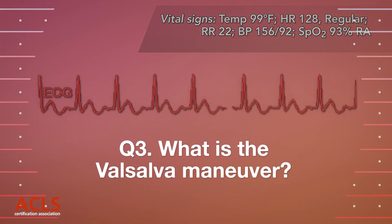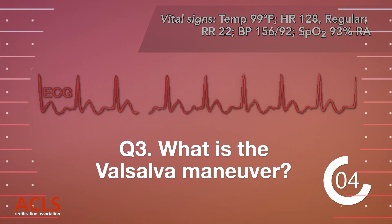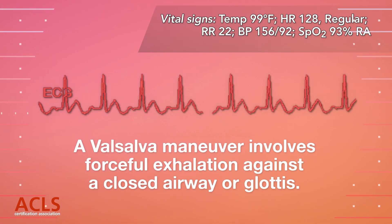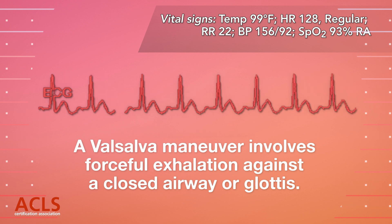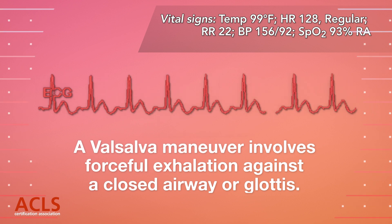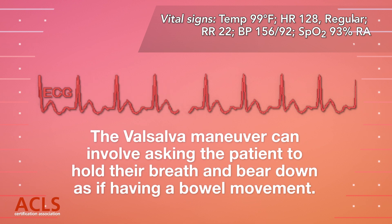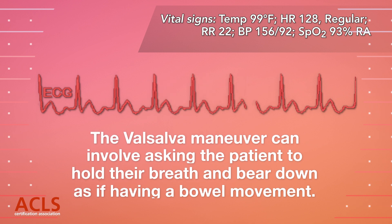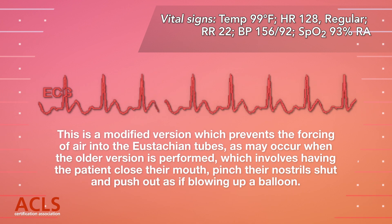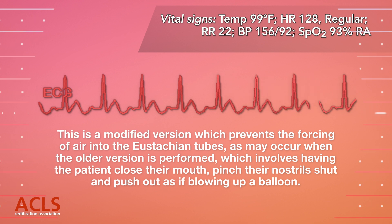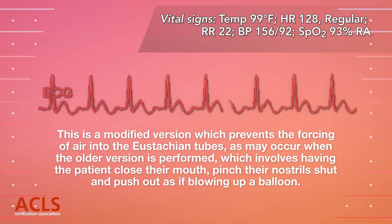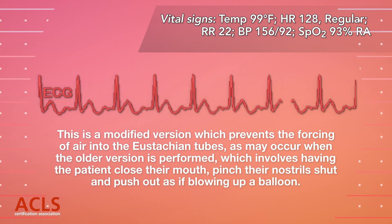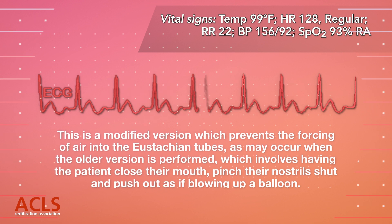What is the Valsalva maneuver? A Valsalva maneuver involves forceful exhalation against a closed airway or glottis. It can involve asking the patient to hold their breath and bear down as if having a bowel movement. This is a modified version which prevents the forcing of air into the Eustachian tubes, as may occur when the older version is performed, which involves having the patient close their mouth, pinch their nostrils shut, and push out as if blowing up a balloon.